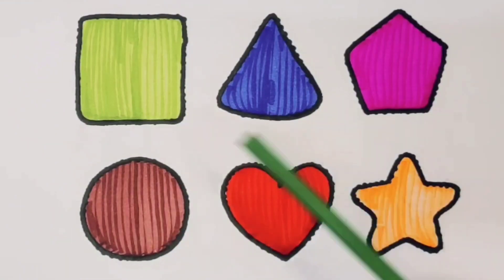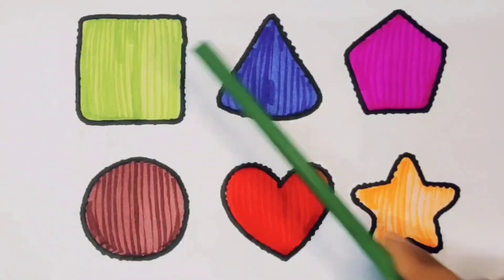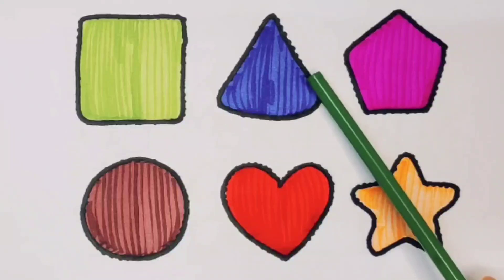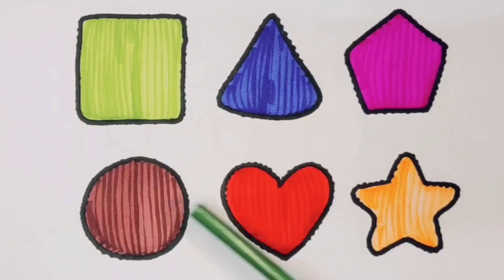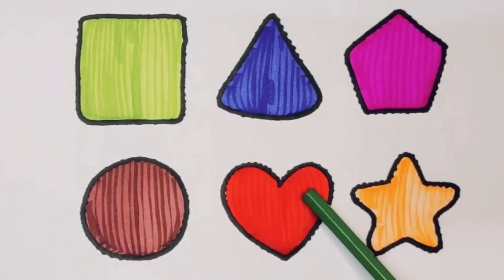What you will learn? Green color square, blue color triangle, pink color pentagon, chocolate color circle, red color heart, orange color star.